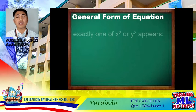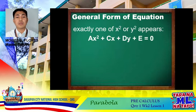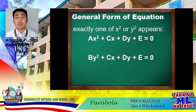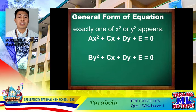Let's proceed with the general form of the equation of a parabola. Exactly one of the variables, either x or y, is on the second degree. The first general form is Ax² + Cx + Dy + E = 0, where x is on the second degree, so the parabola opens either upward or downward. The second form is By² + Cx + Dy + E = 0, where y is on the second degree, so it opens either to the right or to the left.